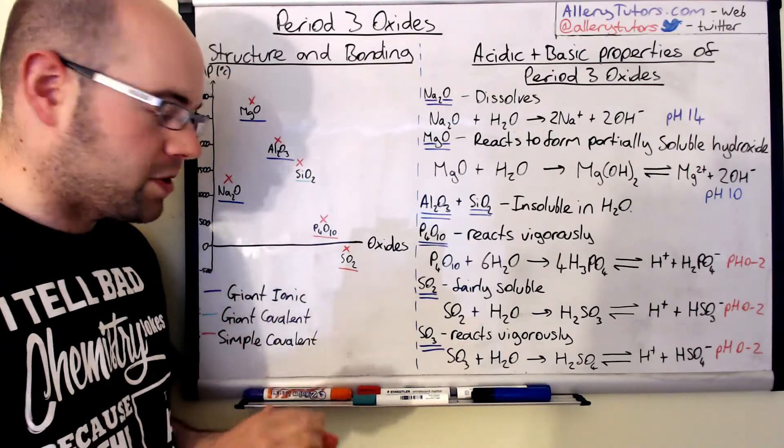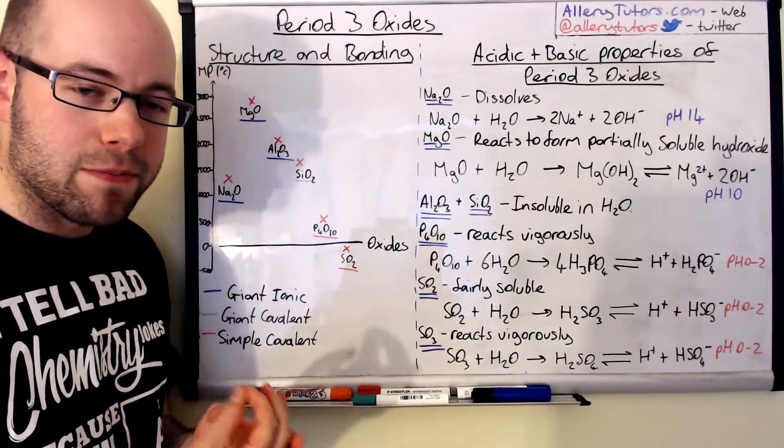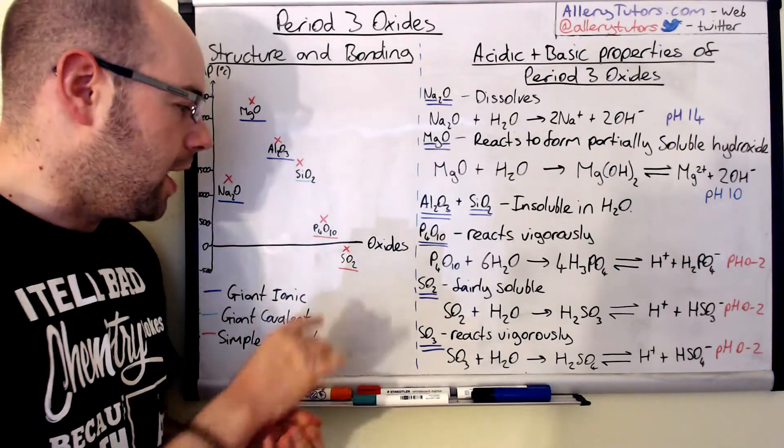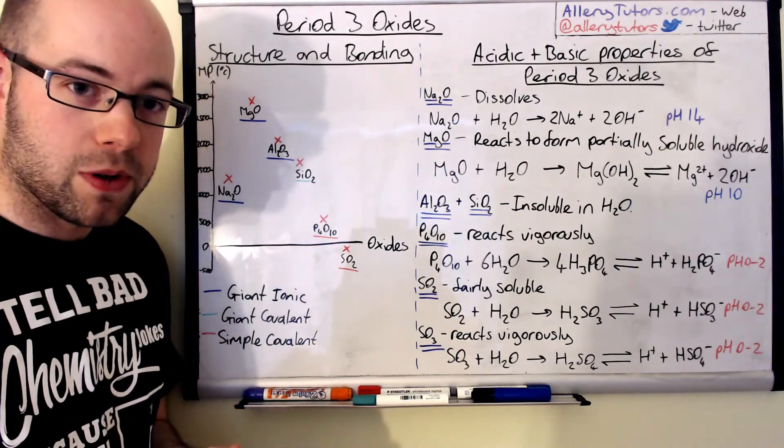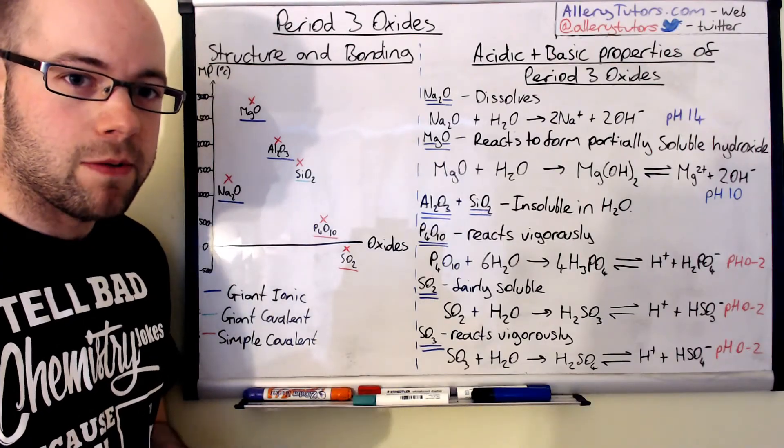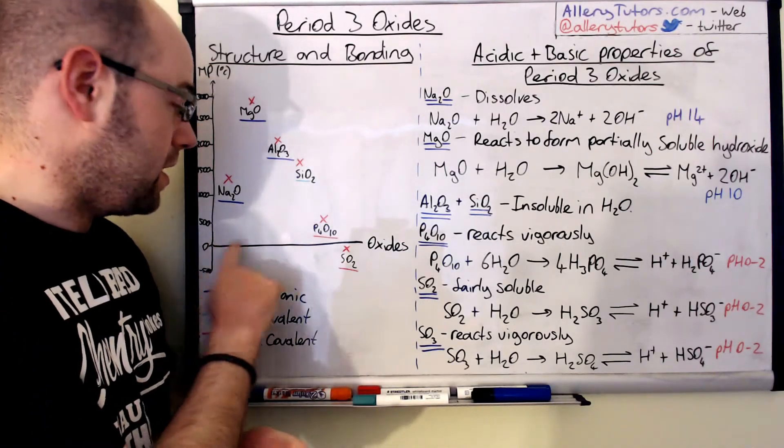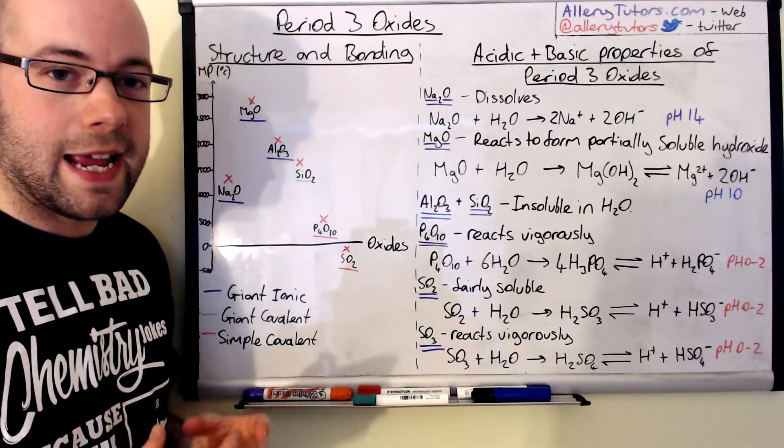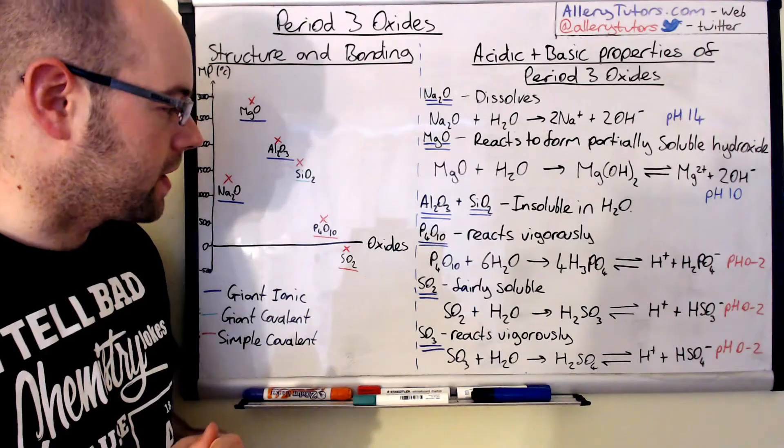And if we go on to the last one here which is sulphur dioxide, again a much simpler molecule even in comparison to phosphorus oxide, and that means that it is a simple covalent molecule with a very low melting point, and that's why it's actually below the zero mark and as you would expect, sulphur dioxide is actually a gas at room temperature.